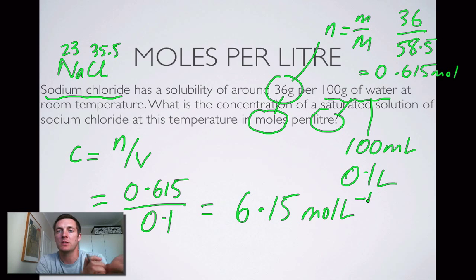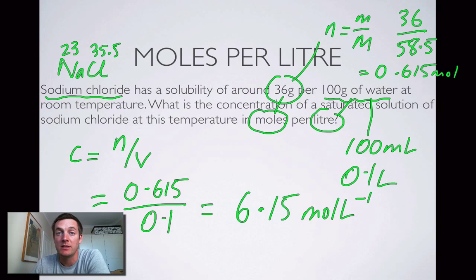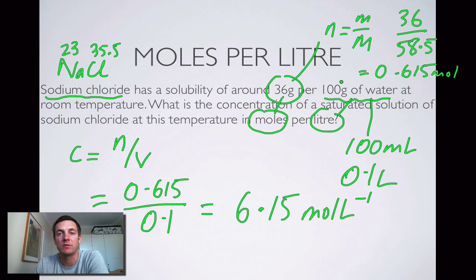When using moles per liter, you can quite easily use the formulas we know to turn masses into moles. If you're told the concentration in grams per liter you should be able to convert that into moles per liter. Have a look at the calculations in this film — if you have any difficulties get some help, and if you're happy with those move on to the third film which is about ion concentrations.